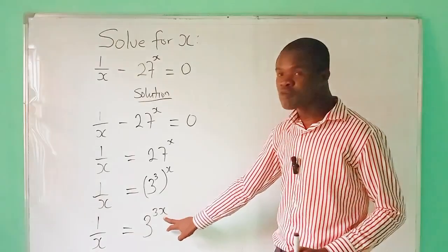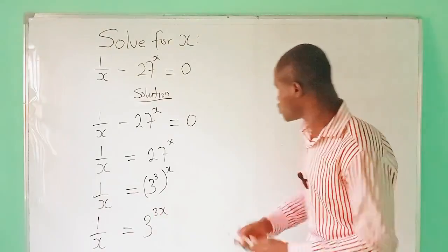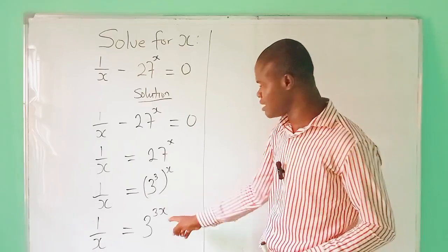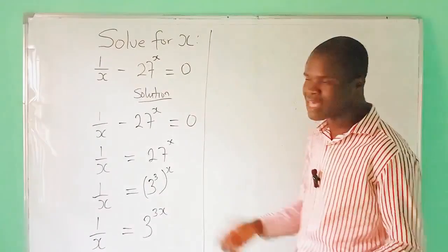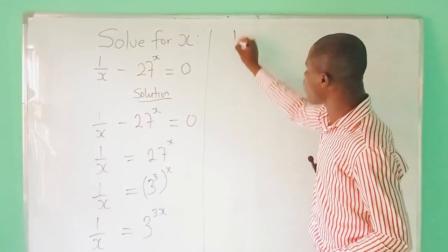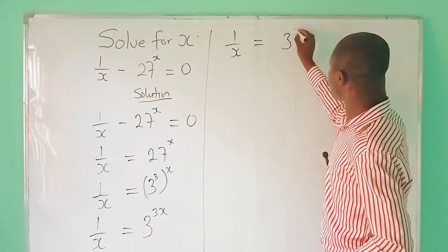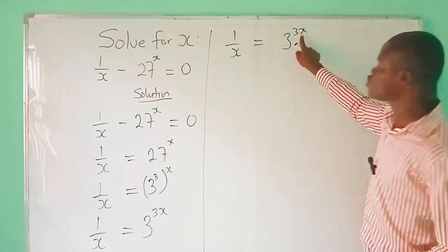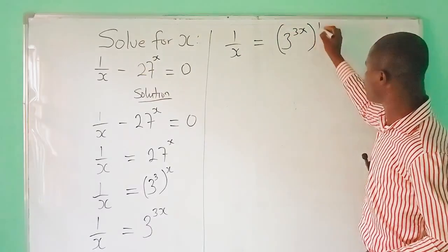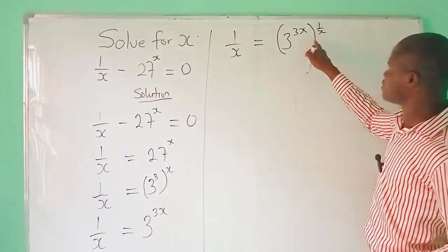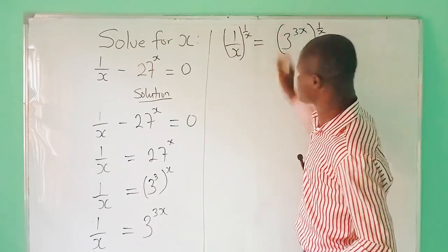The next thing to do is to remove this x so that we can have a neater equation. I am going to multiply both powers by 1 over x. That is, 1 over x equals 3 raised to the power 3x. I will multiply all the powers here by 1 over x.